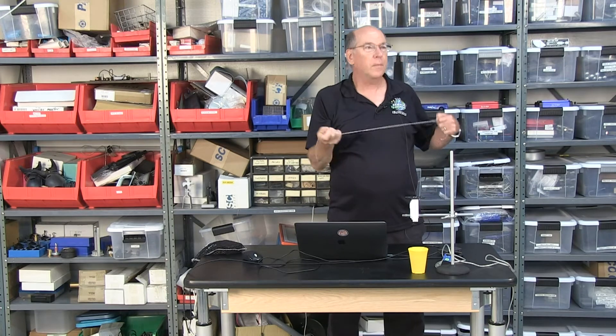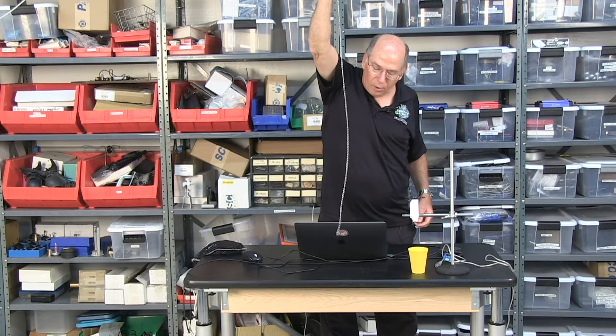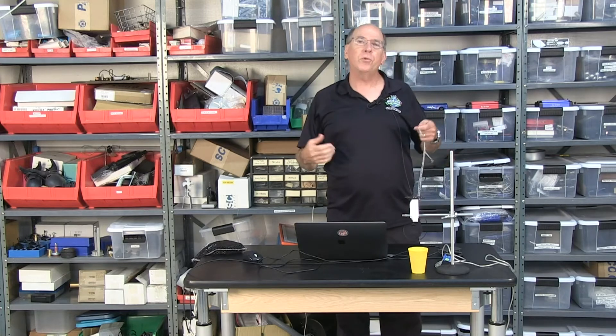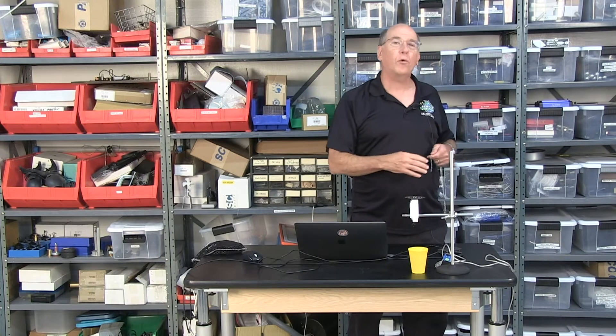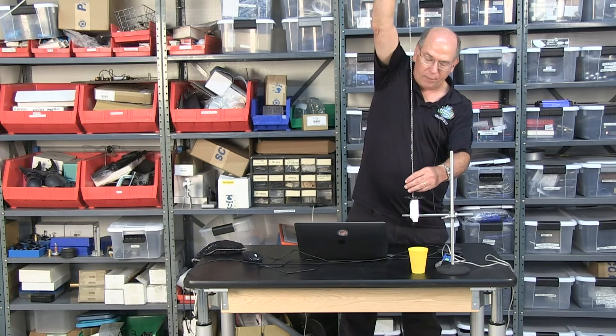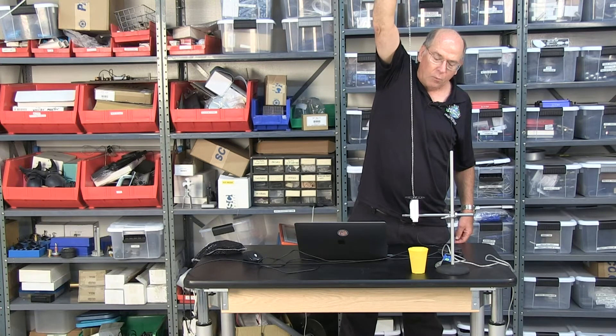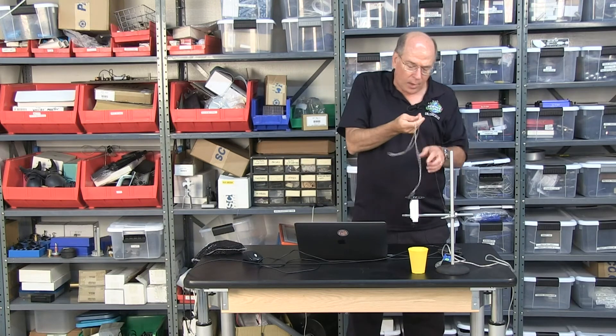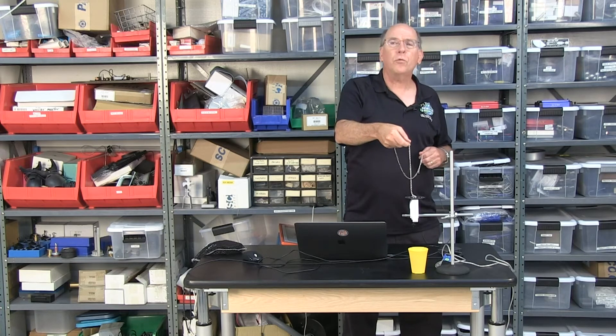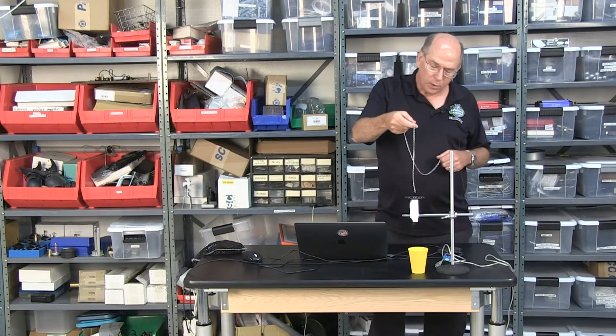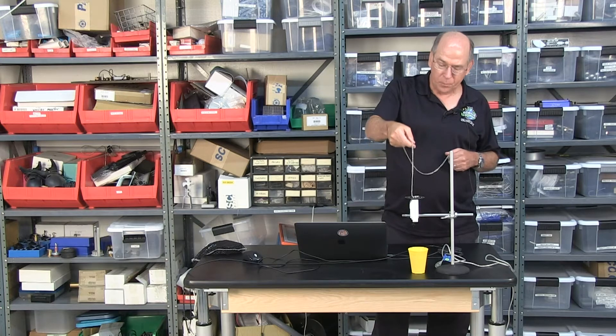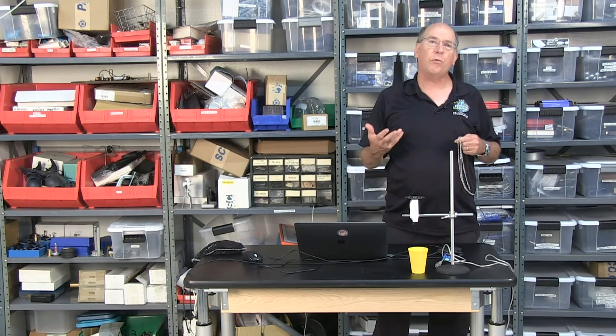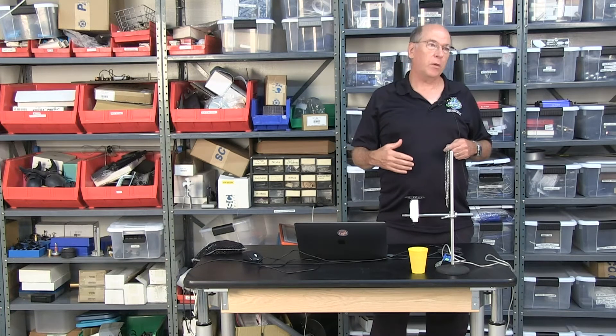This first one here is dealing with a chain that we are going to drop, and what I want to know is the force on the table from the chain as it falls. To measure that, we'll have it land on this force sensor. As it's hitting, there are two components to the force: there's the weight of the chain that's resting on it, and then as it falls, the chain is coming to a stop, so the force sensor has to apply an extra force to stop the chain equal to the rate of change of momentum.